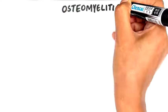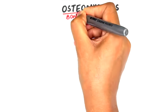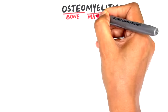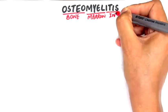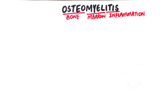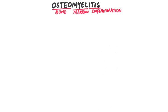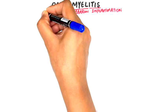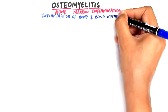Let's talk about osteomyelitis. The term 'osteo' means bone, while 'mylo' comes from the Greek word 'mylos' which means bone marrow, and 'itis' indicates inflammation. Together, osteomyelitis refers to the inflammatory condition of bone and bone marrow extending to the periosteum of the bone, typically due to an infection.